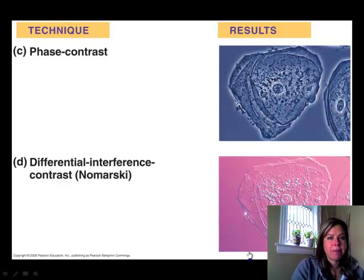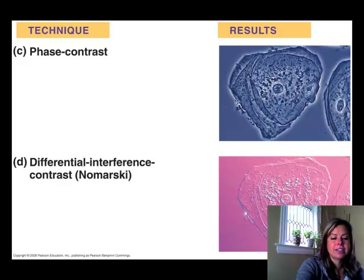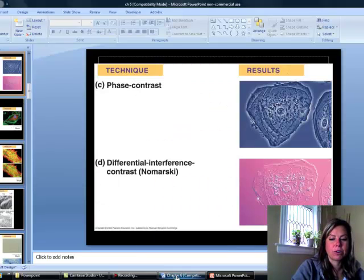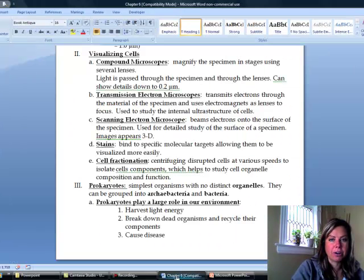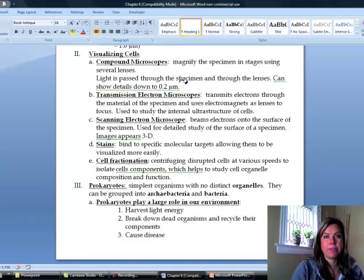Using a compound microscope, these look like cheek cells — this is how the image is going to look, and you can see the cell. The nice thing about compound microscopes is that they're a lot cheaper and you can keep the specimen alive, like with those little guys who were zooming around.